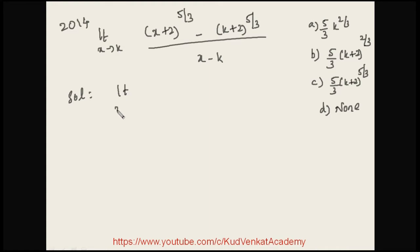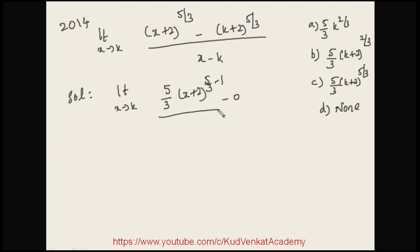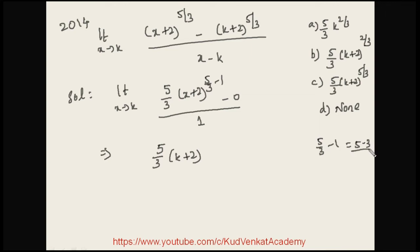Applying L'Hôpital's Rule: limit x → k — the power is 5/3, so we multiply: 5/3 · (x+2)^(5/3 - 1) in the numerator. The term with k is a constant, so its derivative is 0. In the denominator, the derivative of x is 1 and derivative of k is 0. Substituting x = k: 5/3 · (k+2)^(5/3 - 1) = 5/3 · (k+2)^(2/3). The answer is option (b).